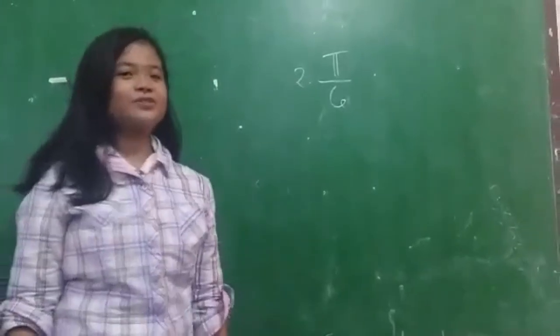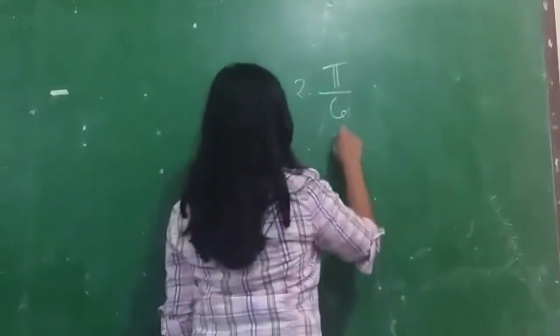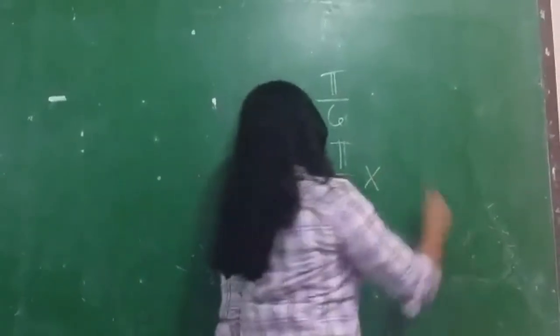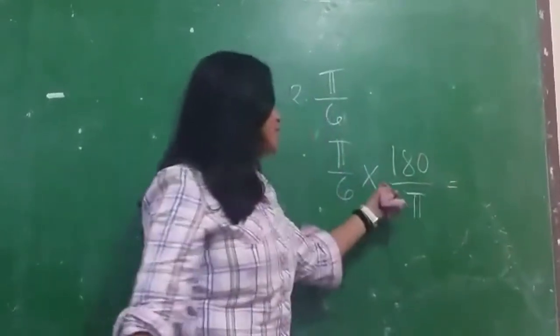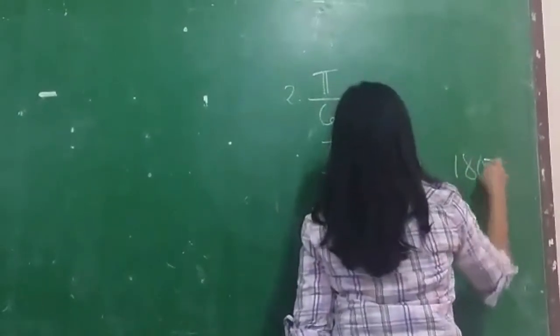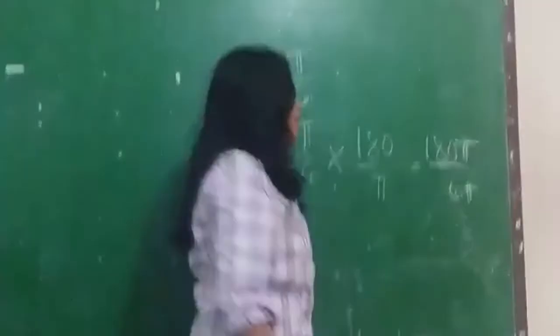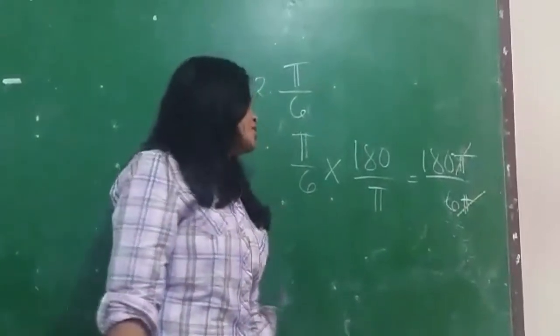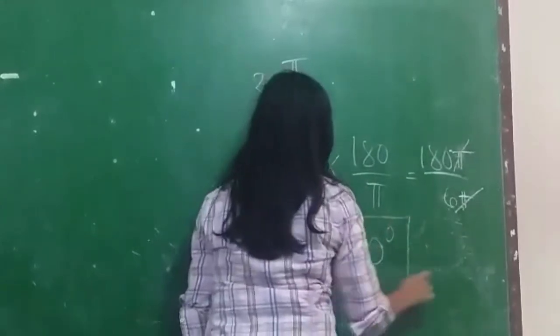Now let's move on to radians to degrees. 5π over 6, we will multiply it to 180 over π. Then 180 times 5 is equals to 900. Then 6 times π is 6π. Then we will cancel π. And 900 over 6 is equals to 150 degrees. And here is the final answer.